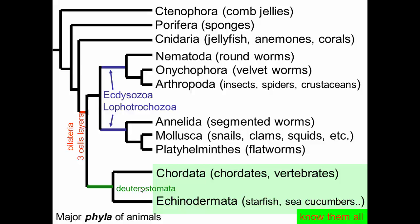The difference between protostomes and deuterostomes — that name arises from during development, the first invagination within the embryo, that first dimple that pokes in: does it develop into the mouth, which is what happens in protostomes, or does that first one develop into the anus and it's the second invagination on the other side that develops into the mouth?